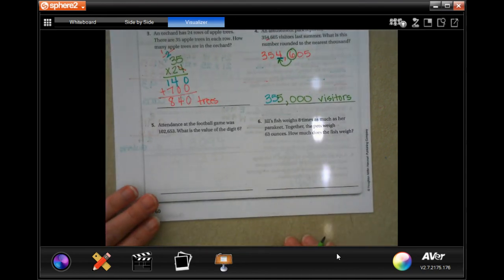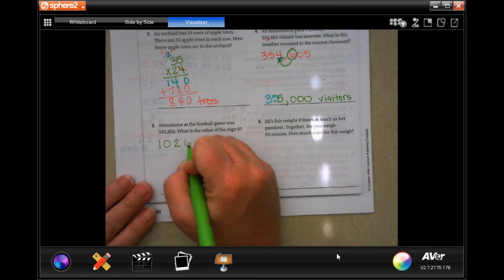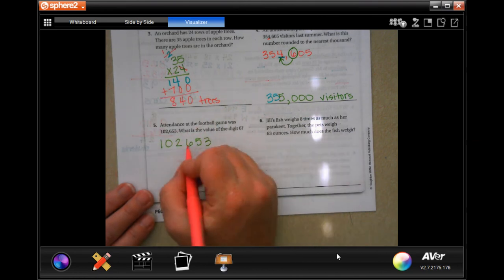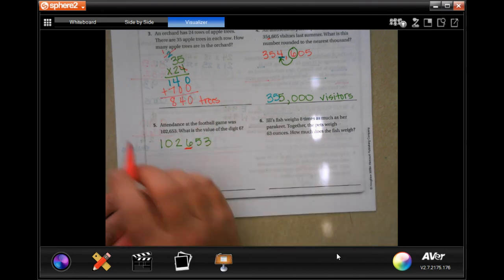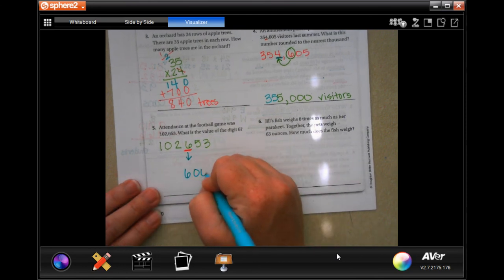All right. Attendance of the football game was 102,653. What is the value of the 6 digit? Now, this one, it doesn't want you to round. It just wants to know what the value of the 6 is. Well, those are super cool because that means that all you have to do is drop down that 6 and everything after it becomes a 0.